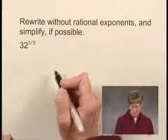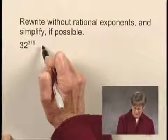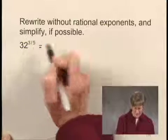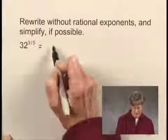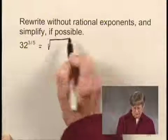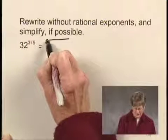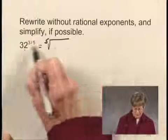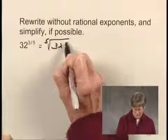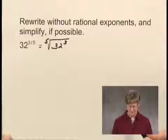We're going to translate to radical notation. When I have 32 to the three-fifths, that tells me that I'm going to have a radical whose index is this denominator, 5, and the radicand then is going to be 32 cubed, or 32 to the third power.